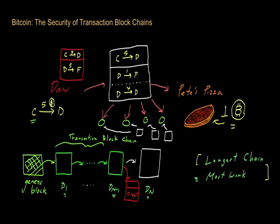What that really means is there's now somehow more than one version of what happened out there. In this example, one branch in this fork is legitimate and the other branch is bogus. The legitimate branch was the one where Dan paid Pete, the vendor, for a pizza.